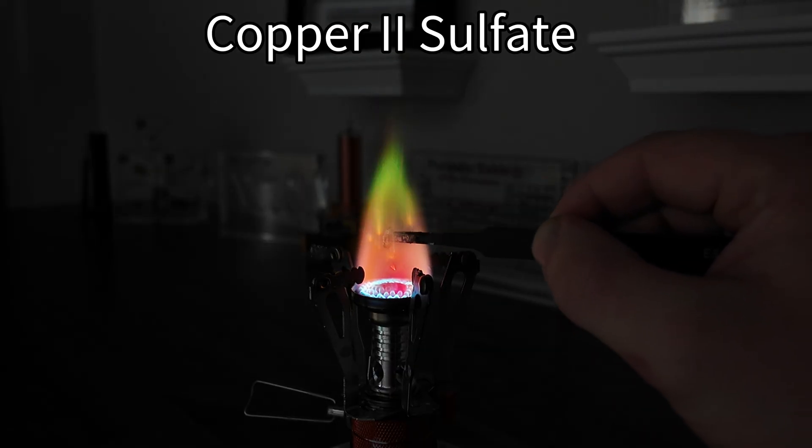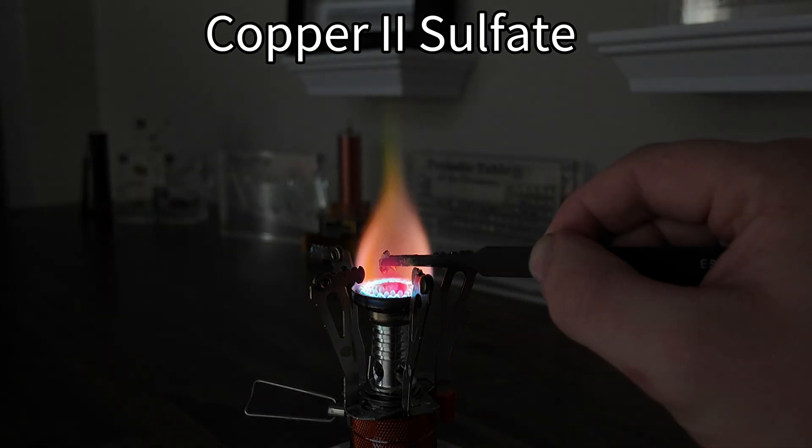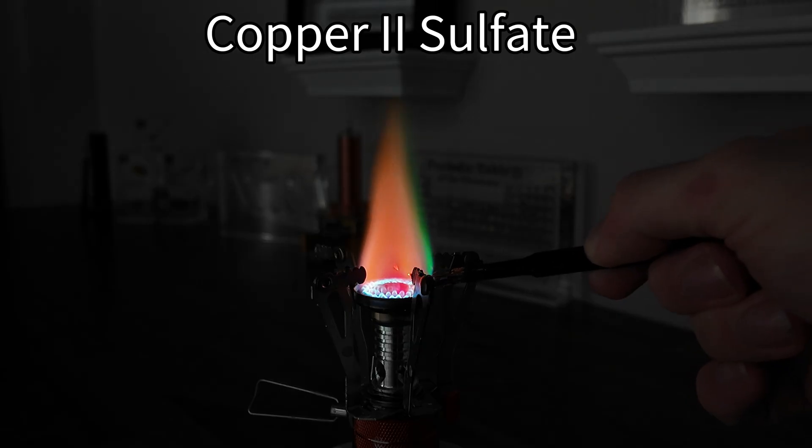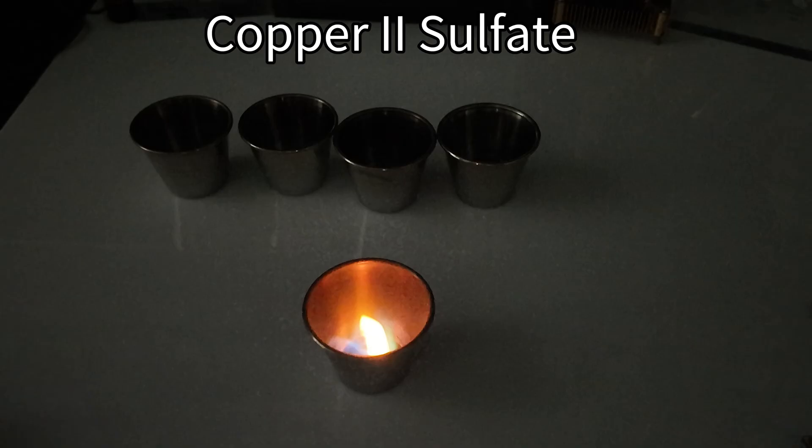So as you can see, when the copper-2 sulfate is heated in the flame, it turns the Bunsen burner's regular flame of orange-ish-bluish to this deep green color.